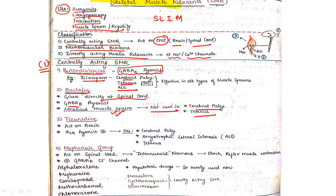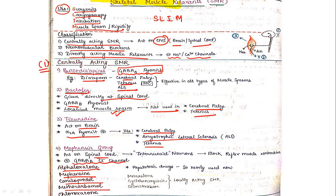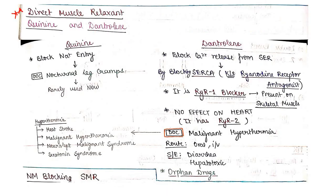Tizanidine acts on the brain as an alpha-2A agonist, decreasing secretion of adrenaline/epinephrine; it can be used for cerebral palsy, ALS, and tetanus. The fourth group is the mefensin group, acting on the spinal cord as GABA-A chloride channel stimulants. Drugs include alpha-loxalon, mefensin, carisoprodol, metocarbamol, and chlorzoxazone. These are hepatotoxic and rarely used nowadays.